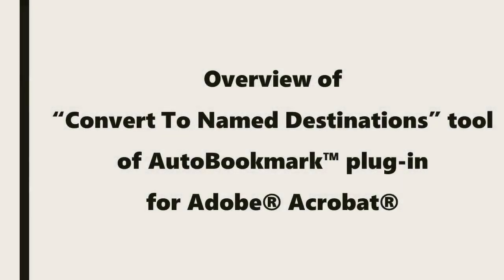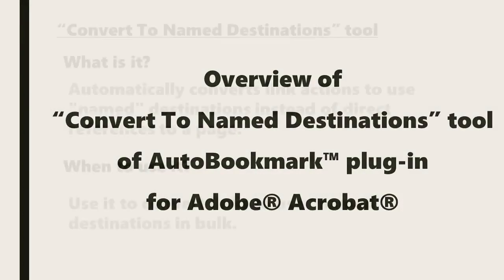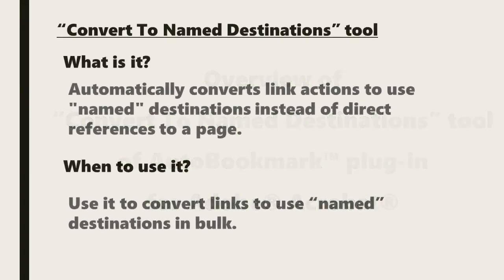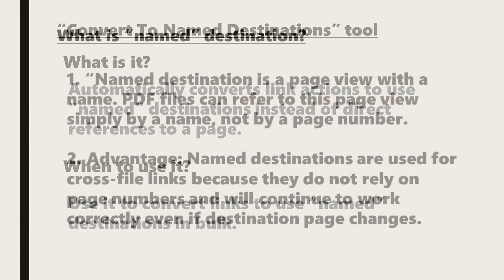In this video we'll look at an overview of the Convert to Named Destinations tool in the AutoBookmark plugin for Adobe Acrobat. So what is this tool and when would we use it? It automatically converts link actions to use named destinations instead of direct references to a page, and it can be used to convert multiple links to use named destinations at once.